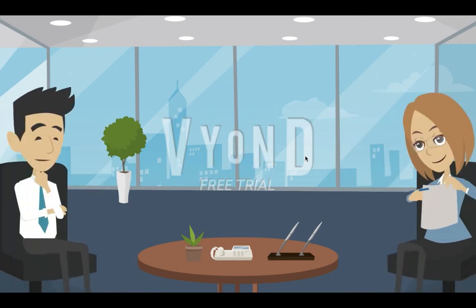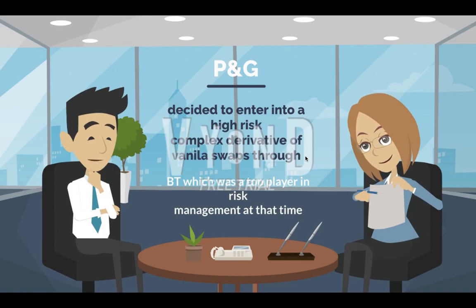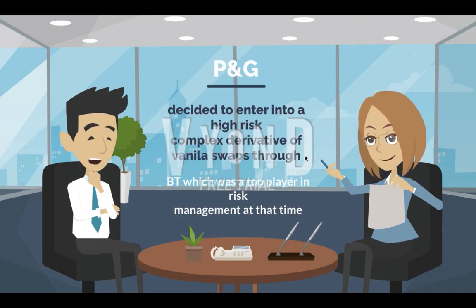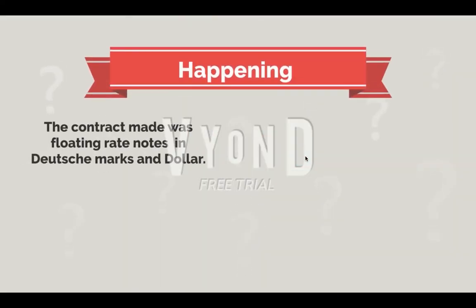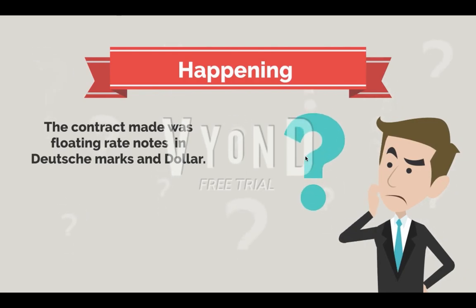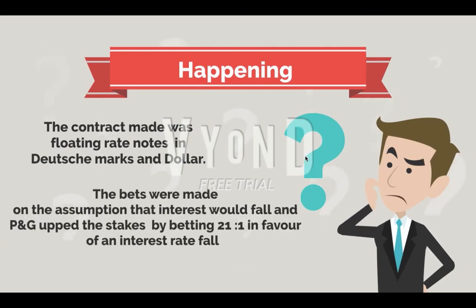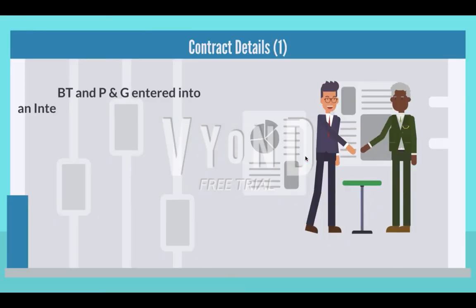As P&G was looking to make small gains wherever possible, they approached Bankers Trust for a derivative deal. P&G decided to enter into a high-risk, complex derivative of vanilla swaps through BT, which was a top player in risk management at that time. The contract was made on floating rate notes in Deutsche Marks and dollars. The bets were made on the assumption that interest rates would fall, and P&G upped the stakes by betting 21-to-1 in favor of an interest rate fall.